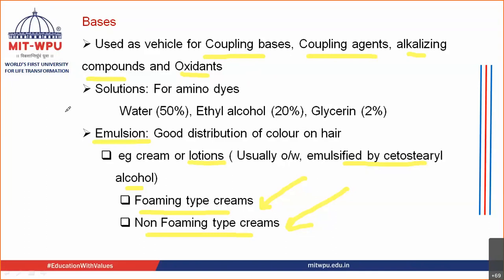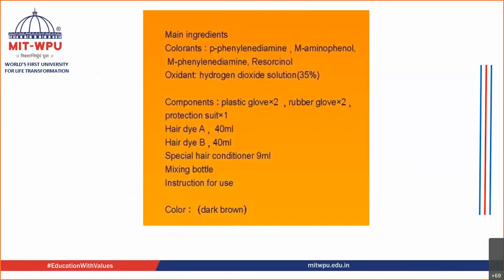Finally you mix them together in order to form a dye. Here is one example formula — most of the compounds we have talked about are present here. It consists of colorant made up of paraphenylenediamine, aminophenol, and metaphenylenediamine — both para and meta phenylenediamine. It also consists of resorcinol, the first coupling compound we saw. The oxygen source is hydrogen peroxide at 35%. These are the ingredients present inside — this is the formulation of your hair dye.